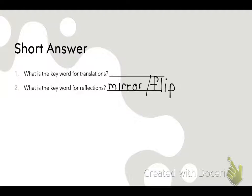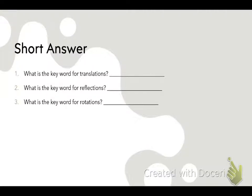Alright, next question: What is the keyword for rotations? Coming over to the Lakers — Lucy didn't get it, but Josh saved her. The answer is 'turn.' The keyword for rotations is turn — that would be an offensive rebound. Good job, Josh, come shoot.